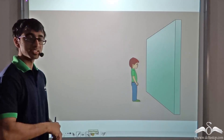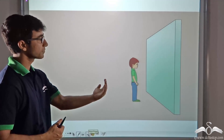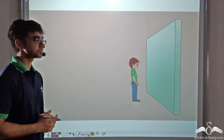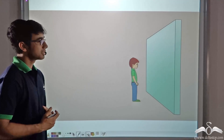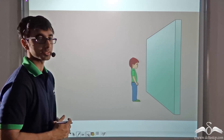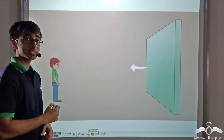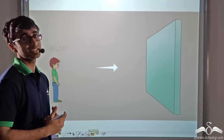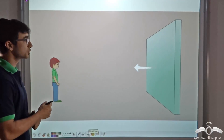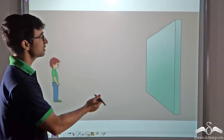You must recall the previous case where Jack was standing very close to a wall and was unable to hear his voice twice. It was happening because Jack was standing at a distance much less than 16.5 meters. However, Jones was standing at a distance of more than 16.5 meters, and that is why Jones was able to hear his voice twice — once when he said it and once when it got reflected.